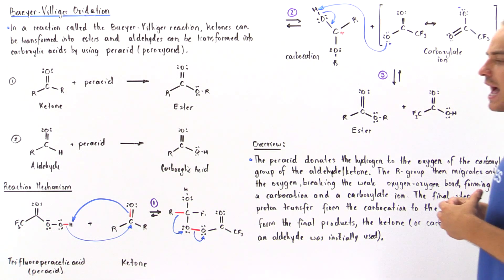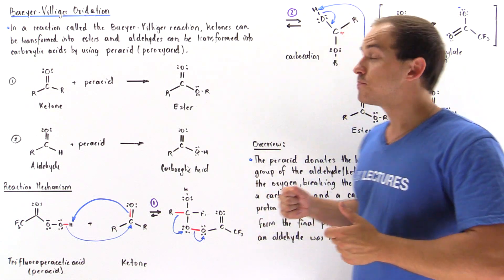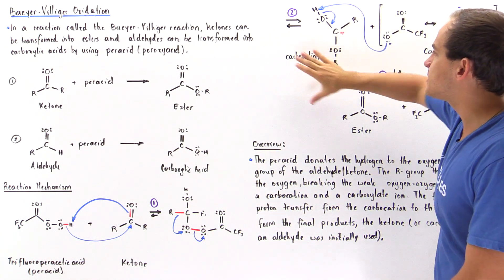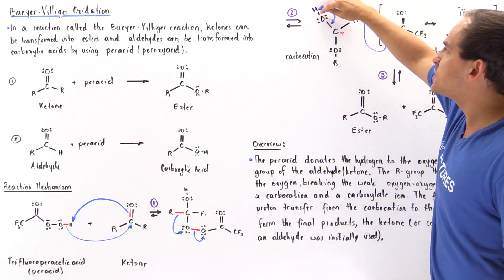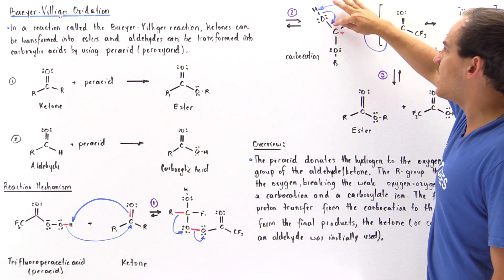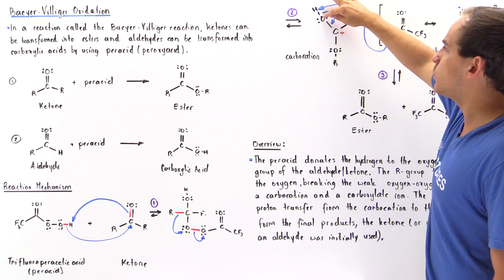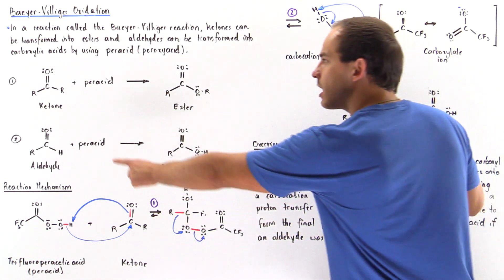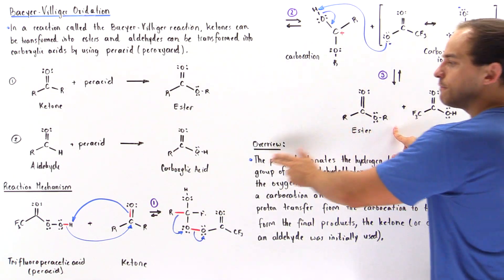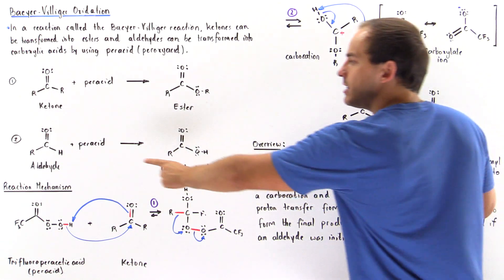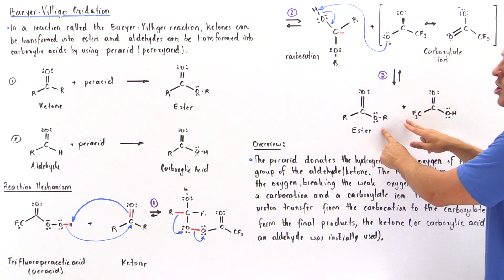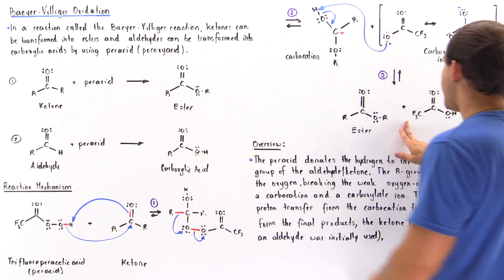In the final step, we have a proton transfer. The carboxylate ion acts as the base, grabbing the proton off the carbocation's hydroxy group. That bond breaks and a pi bond forms between the oxygen and the carbon, yielding the ester in the case of the ketone, or the carboxylic acid in the case of the aldehyde — where the R group would simply be replaced with an H.